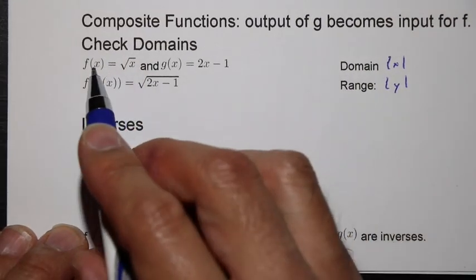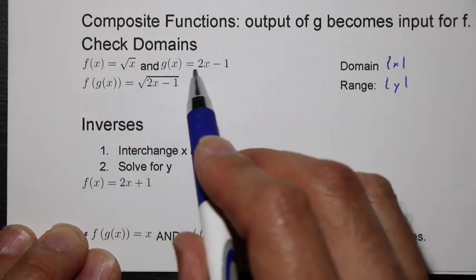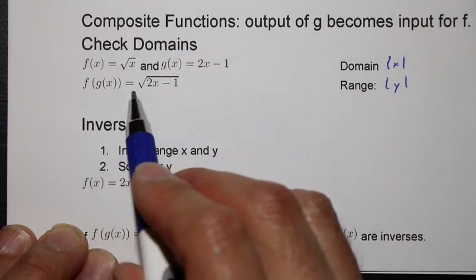So we would check the domains, right? If f of x is equal to the square root of x, we can see here this is x is greater than or equal to zero. g of x is x can be anything. But when we take this composite function, f of g of x, we have to say, well, x could be anything.